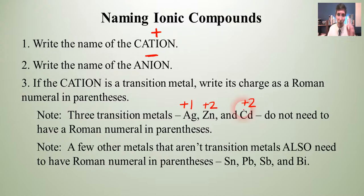And that's because those elements don't have charges that change. Silver is always a plus one. Zinc and cadmium are always plus two. So there's no need. It's actually redundant. If you were to say, zinc two chloride, for example, you don't need to have it there. There are some other exceptions as well. There are a few metals that aren't transition metals, but do need to have Roman numerals in parentheses. And I'm thinking specifically of tin, lead, antimony, and bismuth.